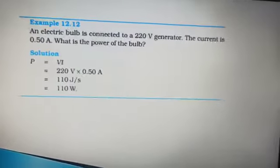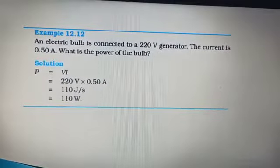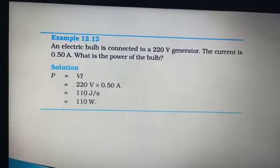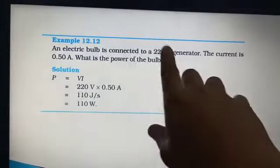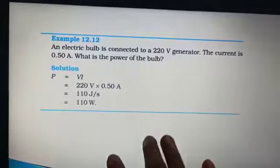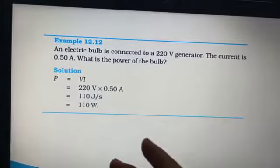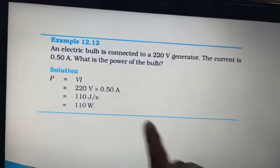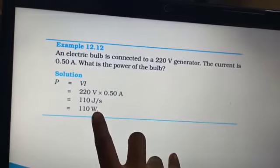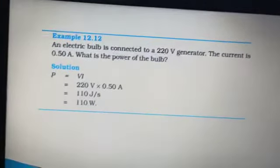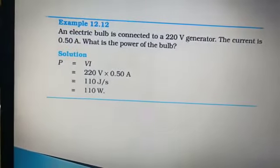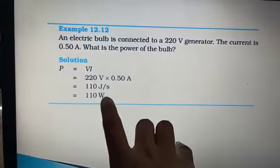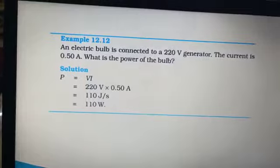Moving on to the next one. An electric bulb is connected to a 220 voltage generator. The current is 0.50 ampere. What is the power of the bulb? They are asking you power. They have given you V, they have given you I. Very simple question. P equals V times I, multiply 220 into 0.50. You can write your answers in joules per second or watts. 1 watt equals 1 joule per second. It is preferable to write it in terms of watts. But students, do not forget if any time you see in the question paper joules per second, joules per second is nothing but 1 watt. Please remember this very clearly.